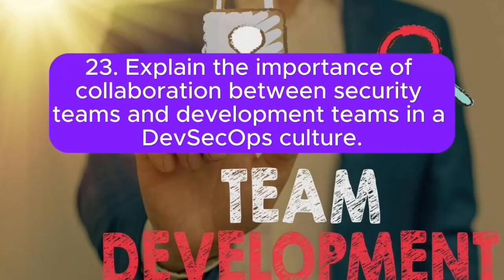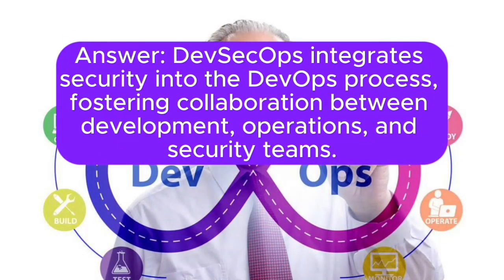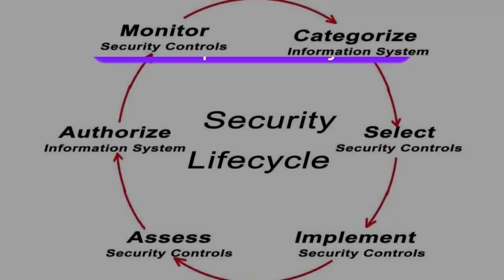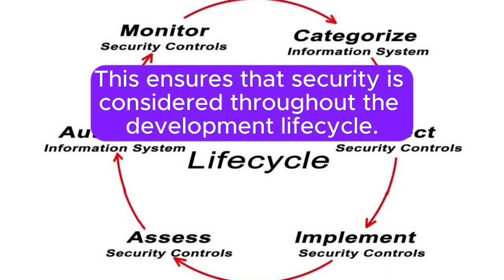23. Explain the importance of collaboration between security teams and development teams in a DevSecOps culture. DevSecOps integrates security into the DevOps process, fostering collaboration between development, operations, and security teams. This ensures that security is considered throughout the development lifecycle.